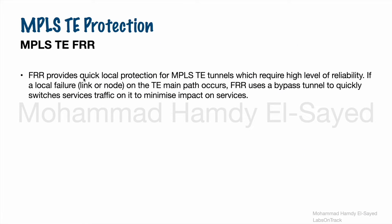FRR provides quick local protection for MPLS TE tunnels which require a high level of reliability. If a local failure — a link failure between two nodes or a node failure on the entire node on the TE main path — occurs, FRR uses a bypass tunnel to quickly switch services traffic onto it to minimize impact. Services traffic is restored on a backup TE path based on the location of the failure. The point that discovers the failure will forward traffic to another TE backup path to reach the destination node.